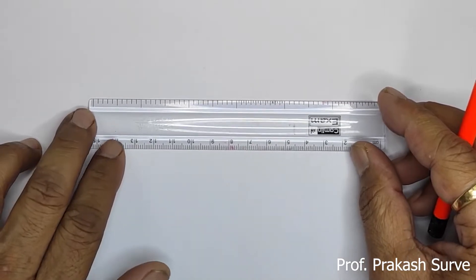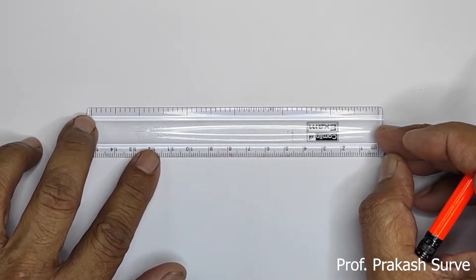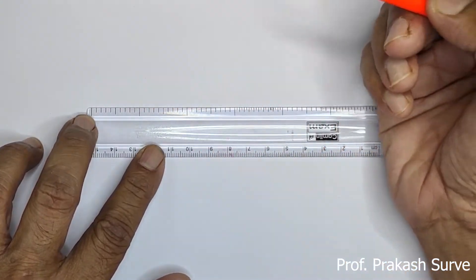So first we will see how to draw rats. First make one straight line with the help of scale, a very rough line.